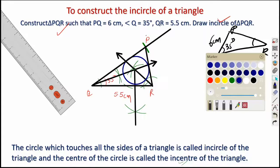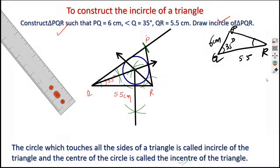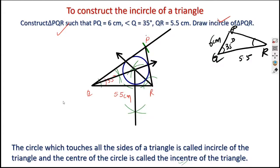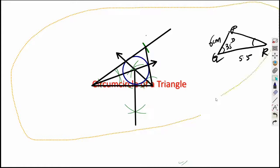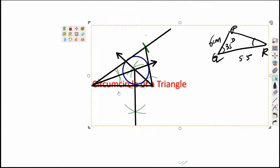You will practice this as much as possible and become expert at it. The next type of construction is the circumcircle. As the name indicates — circumference, boundary, perimeter — a circumcircle is a circle around a triangle.